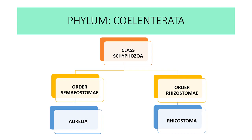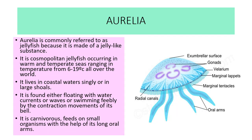The second class is Scyphozoa, with two orders: Semaeostomae and Rhizostomae. The example of Semaeostomae is Aurelia, and the example of Rhizostomae is Rhizostoma. Aurelia, commonly referred to as a jellyfish, is made of a jelly-like substance and is a cosmopolitan jellyfish occurring in warm and temperate seas. It lives in coastal waters singly or in large shoals, floating with water currents or swimming freely by contraction of its bell. It is carnivorous, feeding on small organisms with the help of its long oral arms.